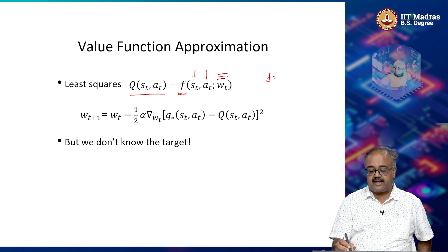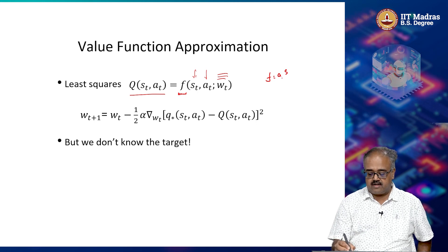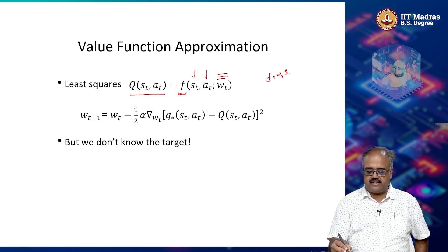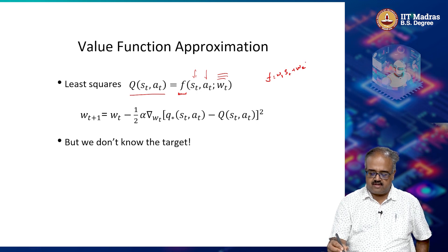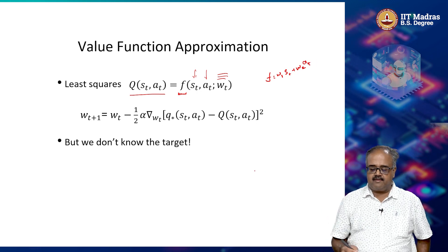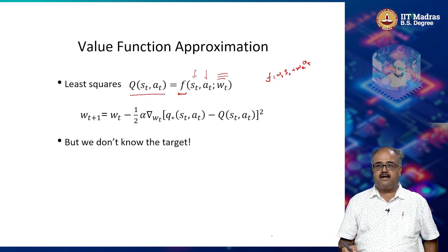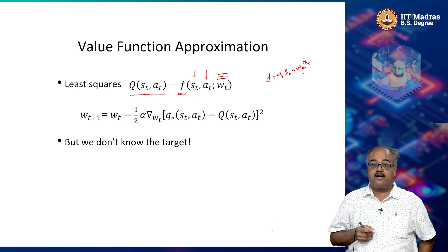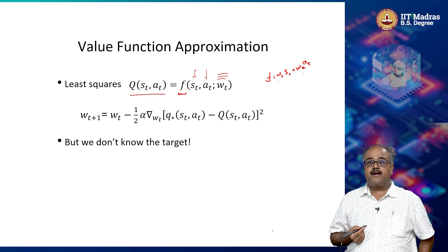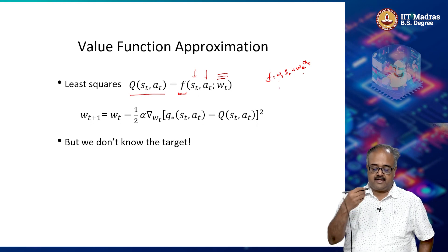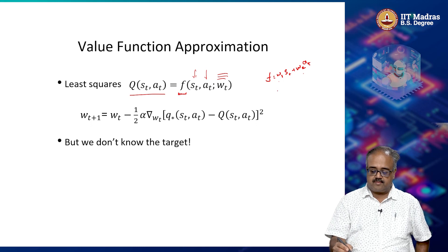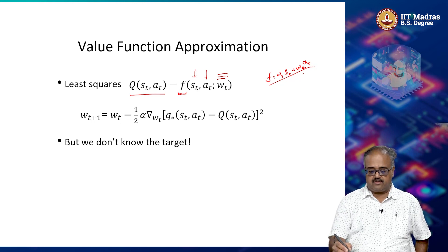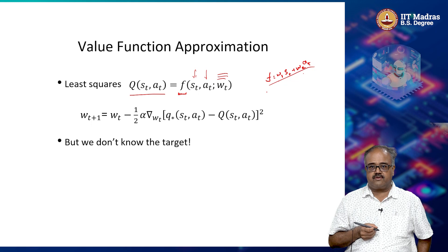For example, f could be w_1 times s_t plus w_2 times a_t — that could be the function f, and I have to learn what w_1 and w_2 are. This assumes that s and a are numbers I can directly plug into this kind of multiplication. This is one way of defining f — a linear way of defining what f is going to be.